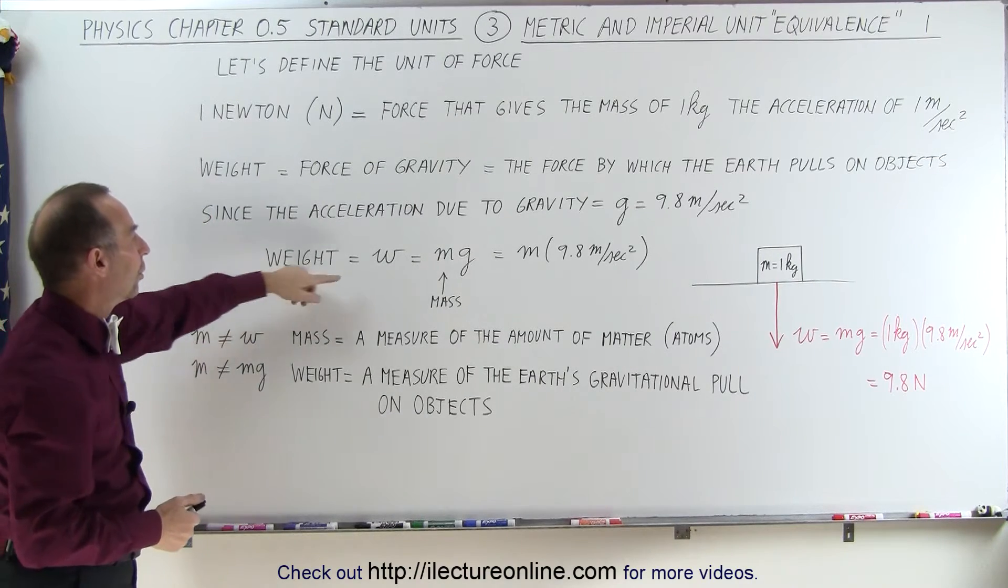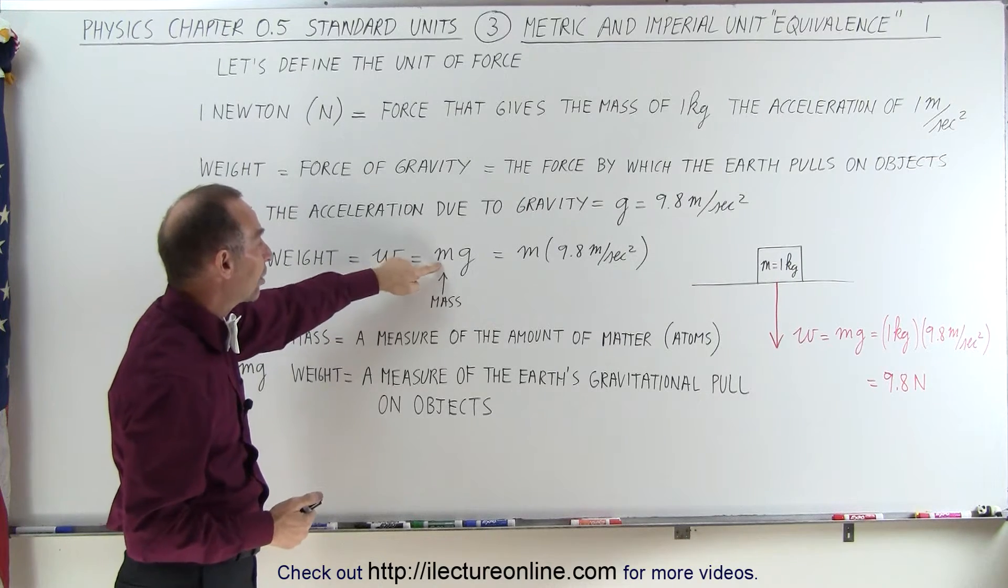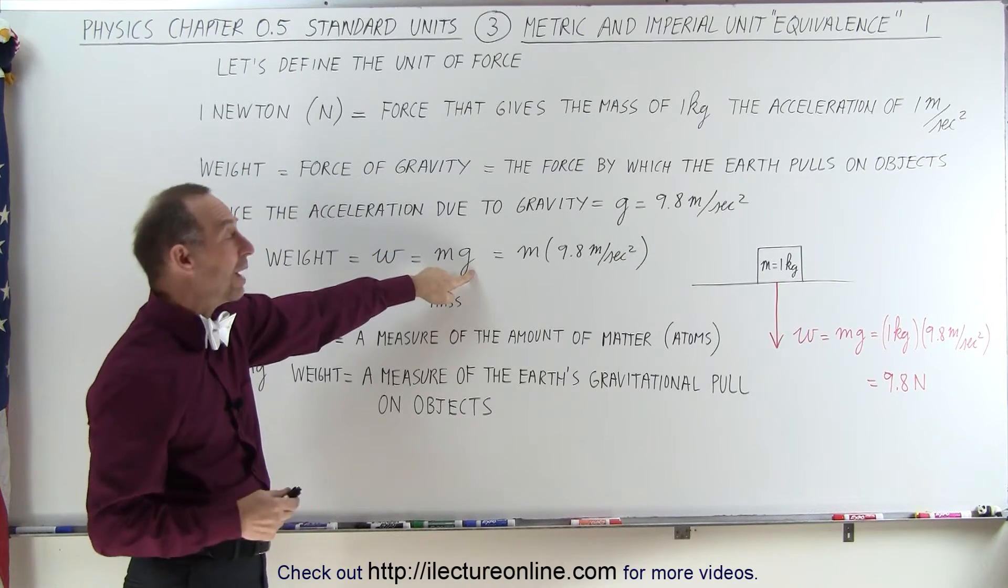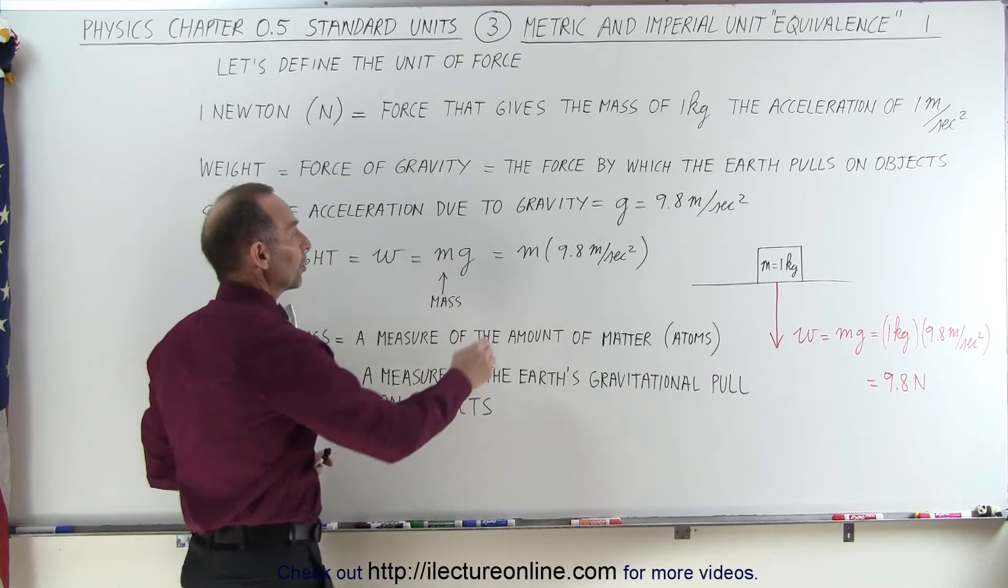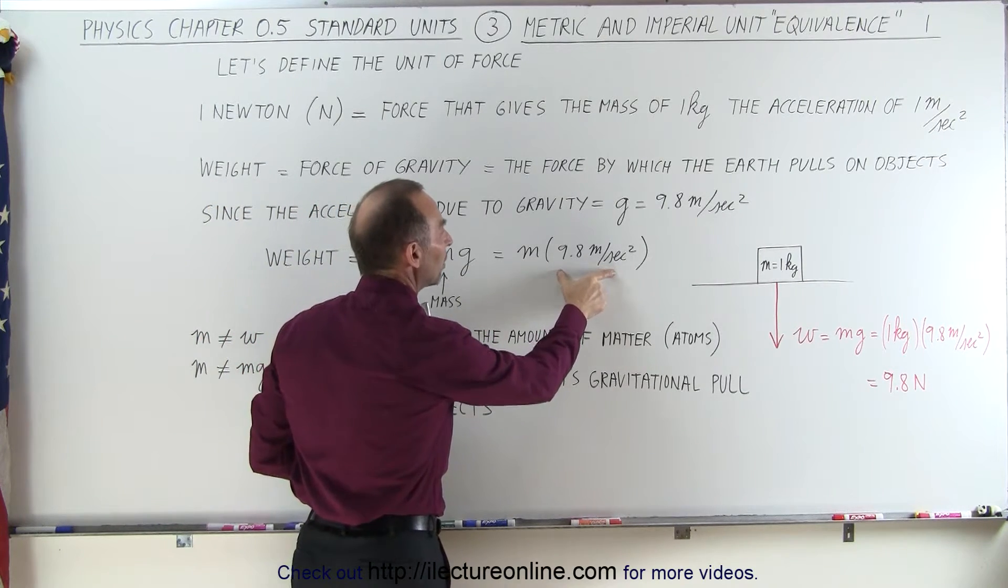So therefore, the weight of an object, which we can use a symbol W for that, is simply the product of the mass of the object times acceleration due to gravity. So all we have to do is multiply the mass of an object times 9.8 meters per second squared to get the weight of that object.